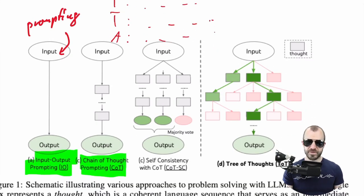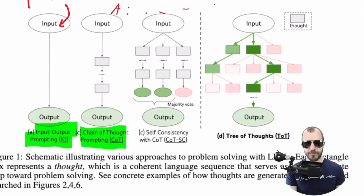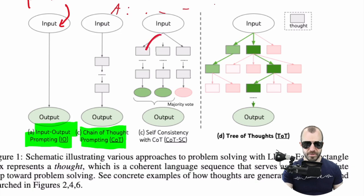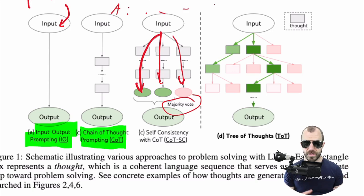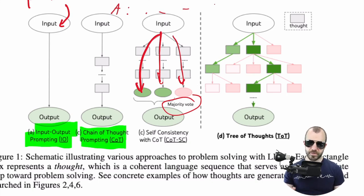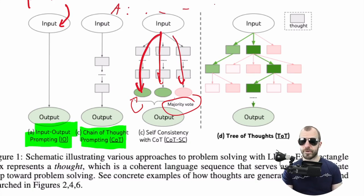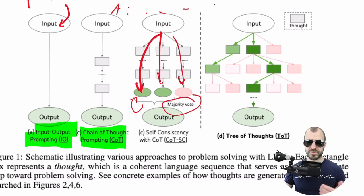Why chain of thought helps isn't fully understood. Hypotheses include that it gives the model a scratch pad to write down thoughts, so later thoughts can refer back to previous ones rather than everything happening in the weights. Another hypothesis is that decoding more tokens gives the model more compute time to invest in a problem. Next, self-consistency with chain of thought mixes CoT with voting — you sample multiple times and majority-vote on the output, which works when you have a classification-style answer.